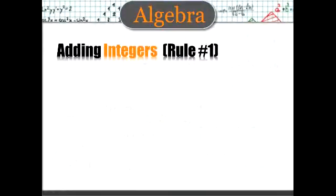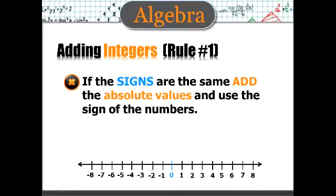Adding integers. Rule number 1. If the signs are the same, add the absolute values and use the sign of the numbers. So 5 plus 3 equals 8. Likewise, negative 5 plus negative 3 is negative 8.